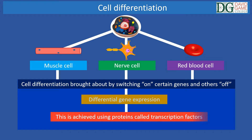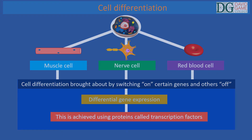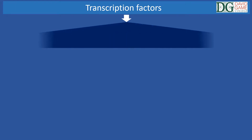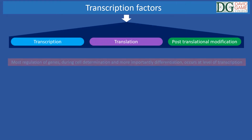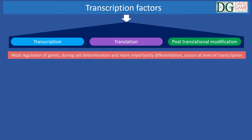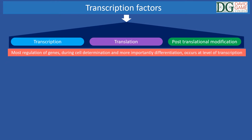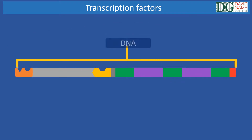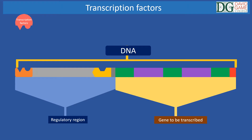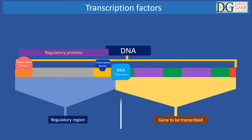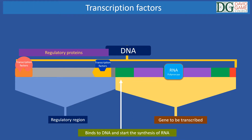This is achieved using proteins called transcription factors. By controlling transcription, translation and post-translational modification, gene expression can be regulated. Most regulation of genes during cell determination and more importantly differentiation occurs at the level of transcription. A transcription factor is a protein that can bind to DNA and either enhance or suppress the expression of a gene. This is largely achieved by making it easier or harder for key enzymes such as RNA polymerase to bind to DNA and start the synthesis of RNA.